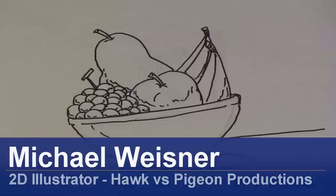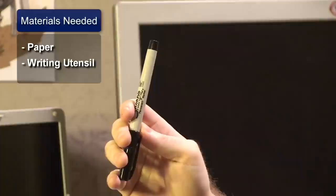First, you're going to want to get some paper and a writing utensil. Now to save time, I've already roughed this image out with pencil. Let's get started.